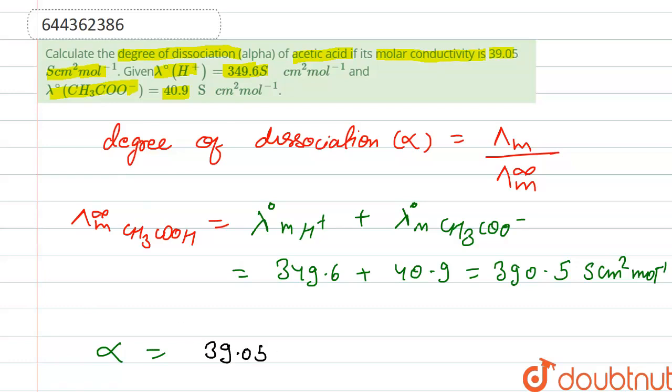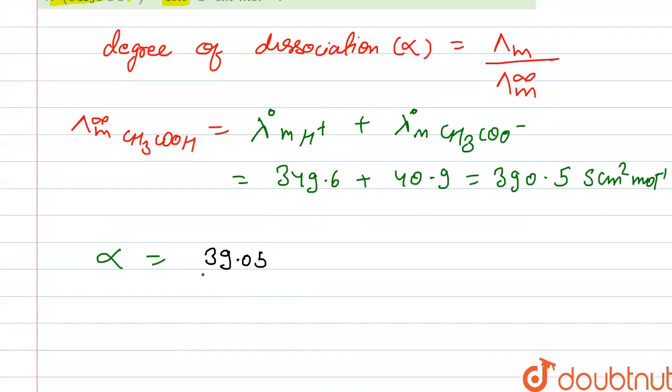Which gives us 0.1. So this is the value of degree of dissociation. Thank you.